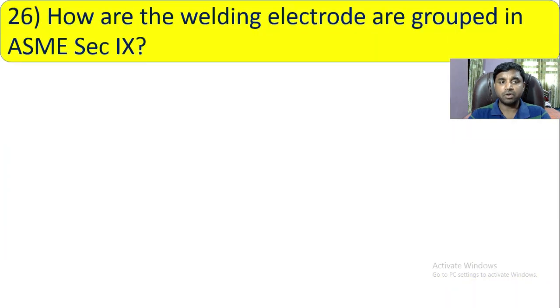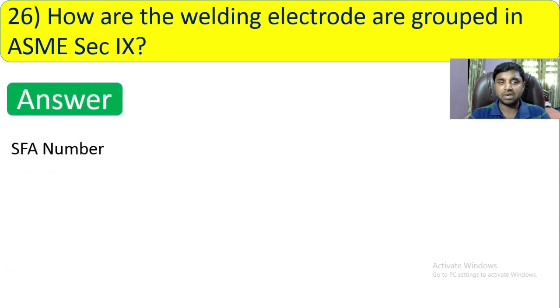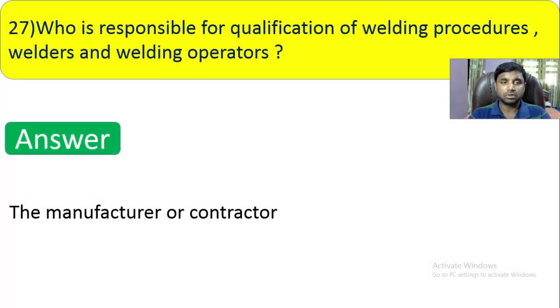Question number 26: How are welding electrodes grouped in ASME Section 9? The answer is by SFA number. If you refer to ASME Section 2 Part C, each electrode has its SFA number, and that is how they are grouped.